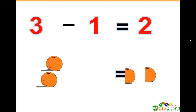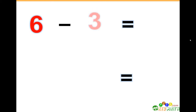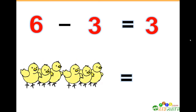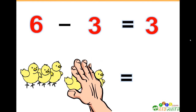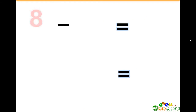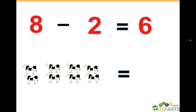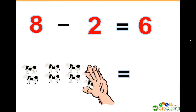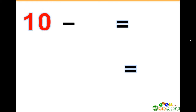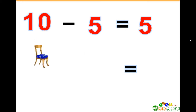3 minus 1 equals 2. If we have three oranges and we take away one orange, we only have two oranges left. 6 minus 3 equals 3. We have six birds; if we take away three of those birds, there are only three birds left. 8 minus 2 equals 6. If we have eight cows and we take away two cows, there are only six cows left.